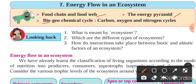Let us start with looking back. Question number one: what is meant by ecosystem? As we have studied in standard eight, ecosystem is the biotic and abiotic factors — meaning living and non-living organisms — and their mutual interactions that form an ecosystem.